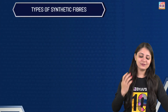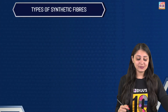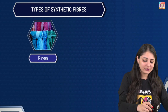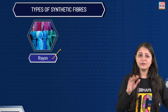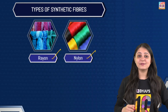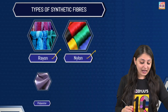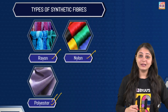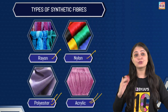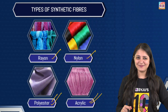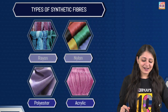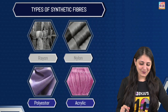Alright, now starting with the types of synthetic fibers. Some of them we've already covered — we've talked about rayon, we've already mastered everything about rayon, and we've talked about nylon as well. Now we'll be talking about polyester and acrylic. These are the two very important synthetic fibers that we will be discussing today. So let's start with polyester.